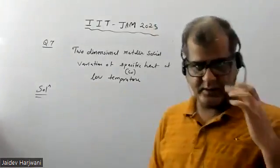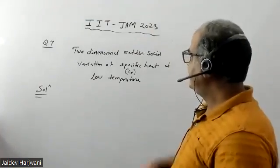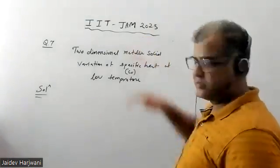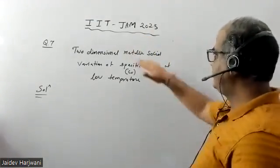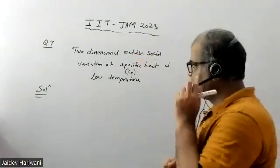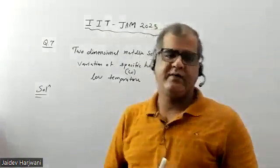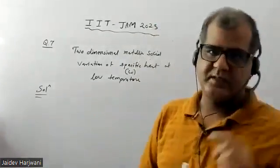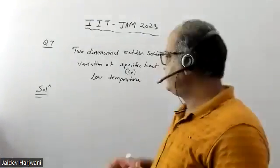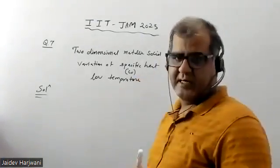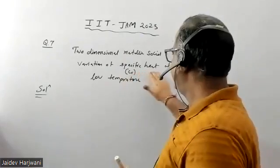Hello students. Can you see this? Question number seven from IITJM 2023 — they have given a two-dimensional metallic solid and asked about the variation of specific heat at low temperature.